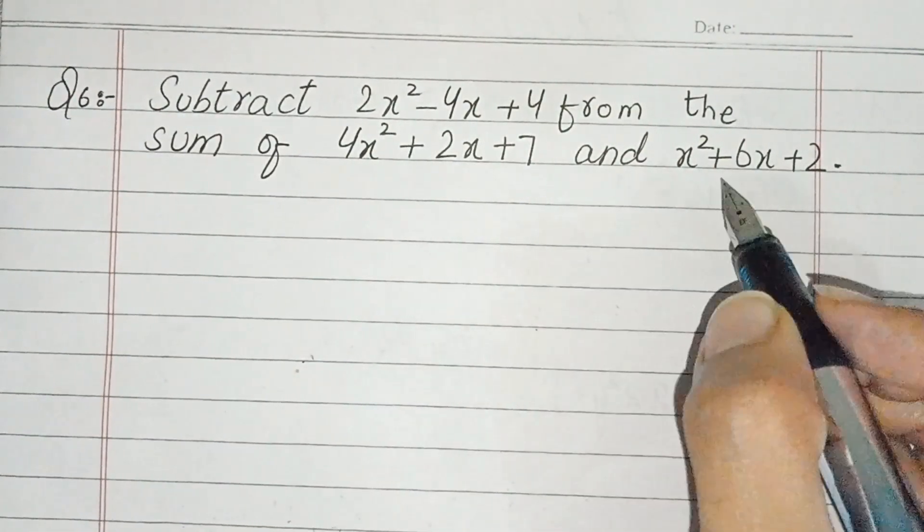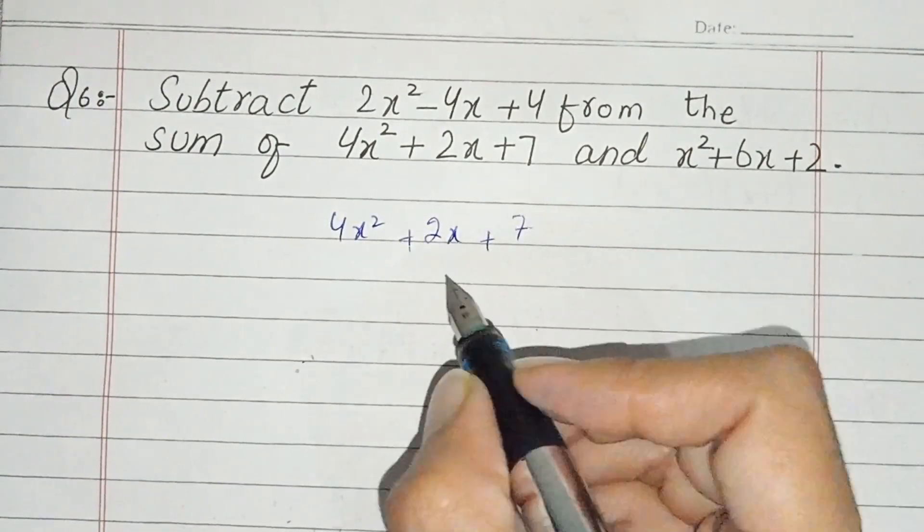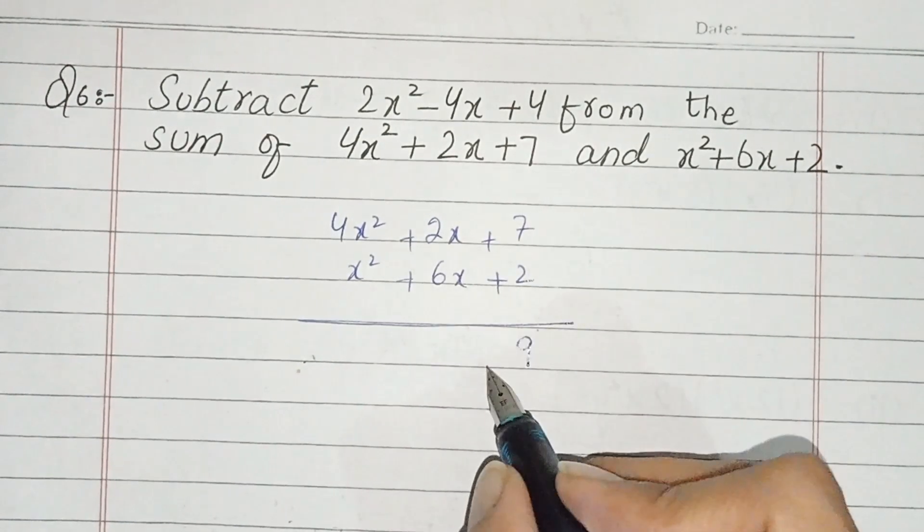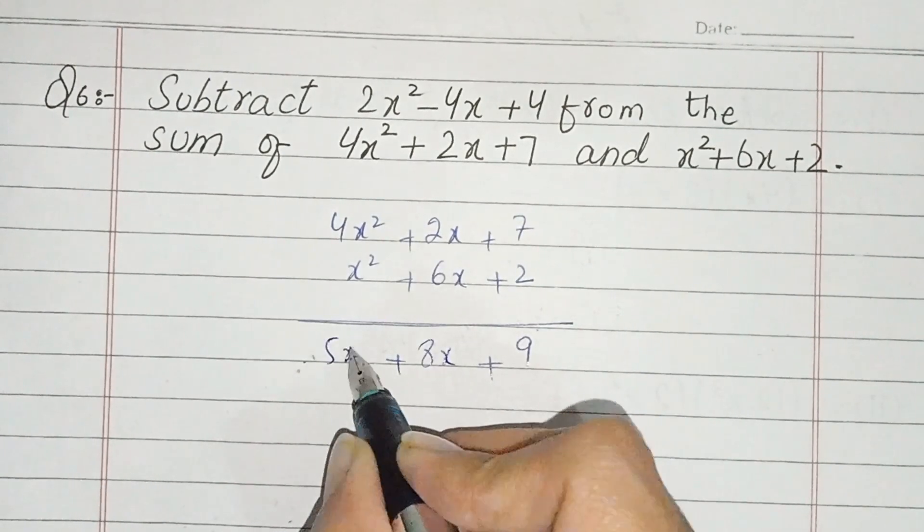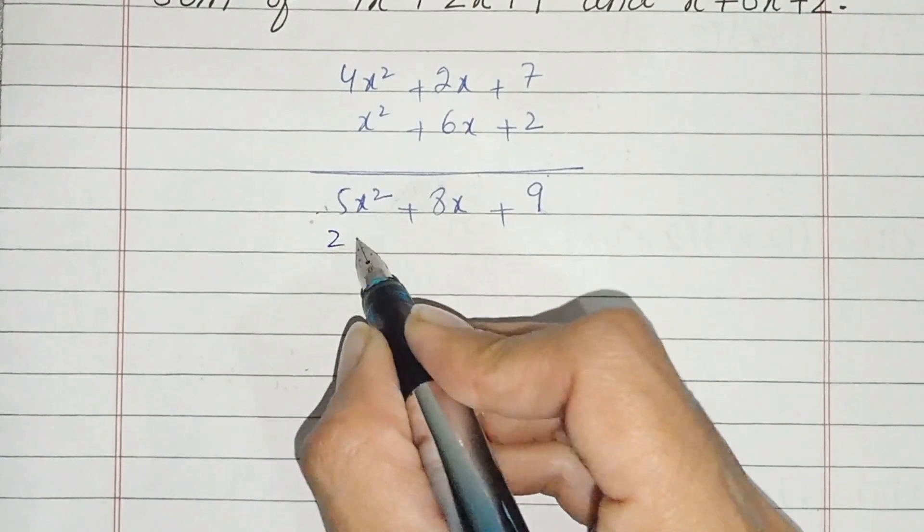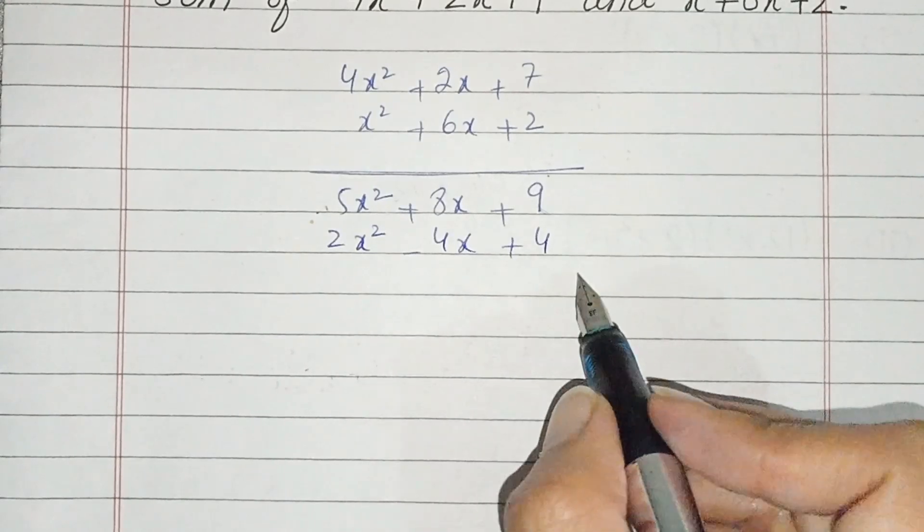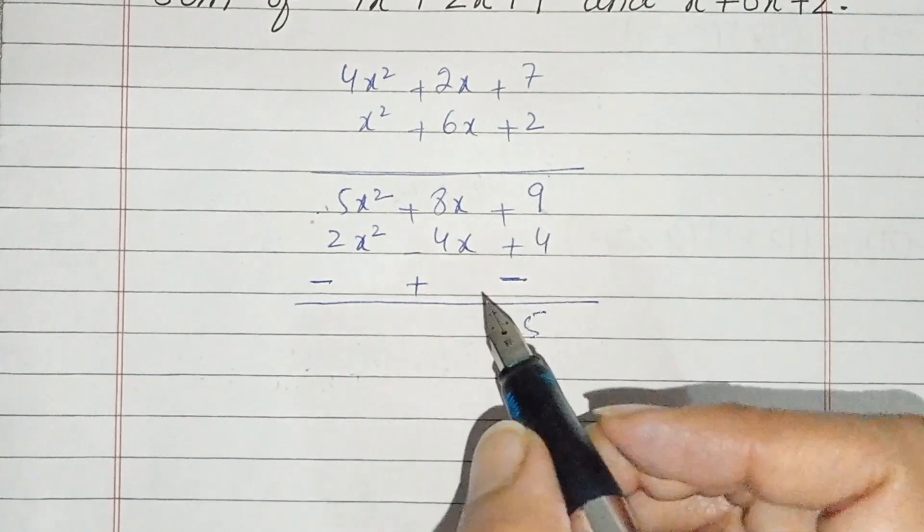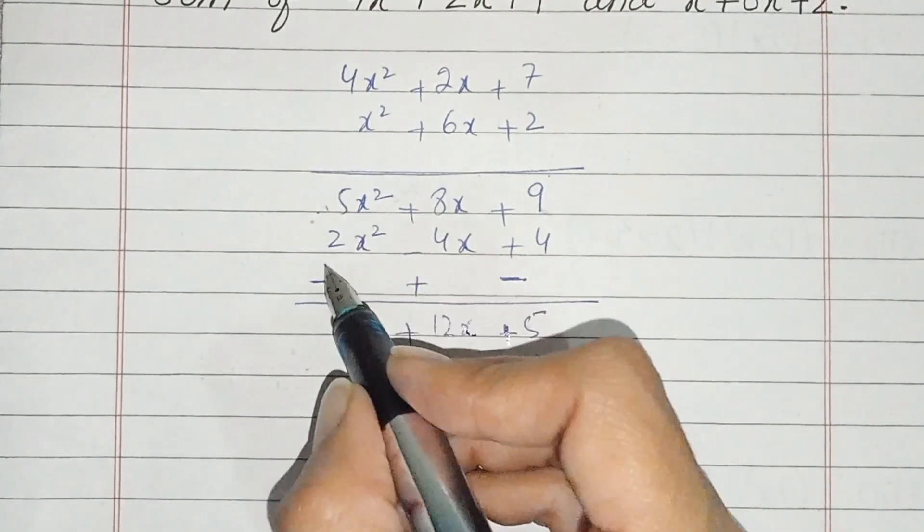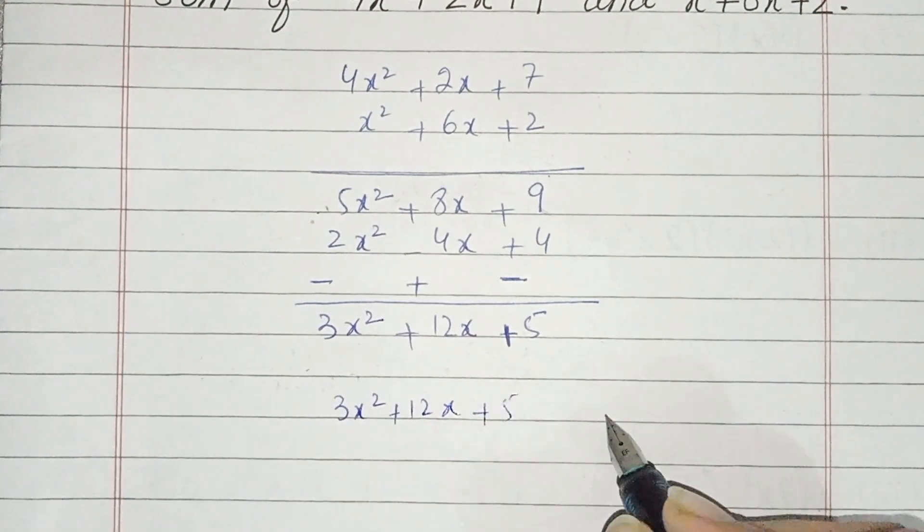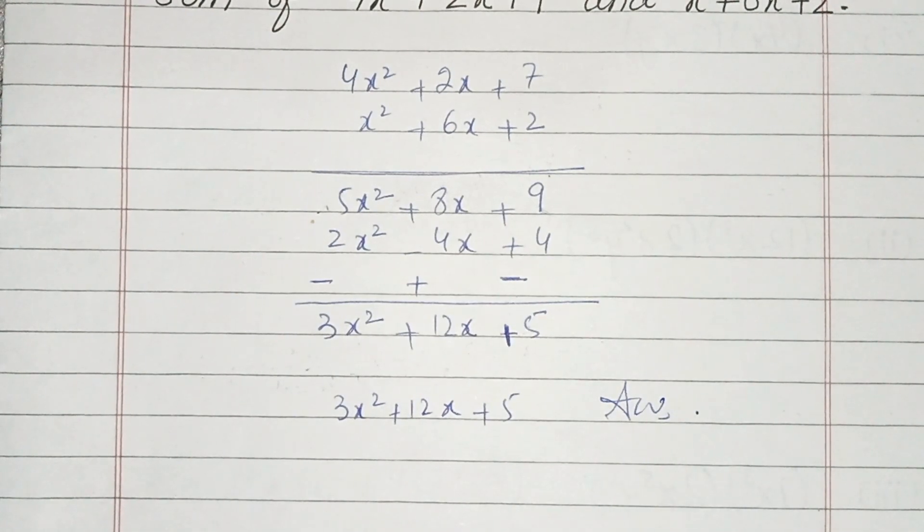Now students question number 6: subtract this value from the sum of these two values. We take the sum: 7x square plus 6x plus 2 plus 2x square plus 2x plus 3. The sum: 7 plus 2 is 9x square, 6 plus 2 is 8x, and 2 plus 3 is 5. Now we subtract: 2x square minus 4x plus 4. We subtract, the signs change. 9 minus 2 we get 7, but it's 4, so we get 5x square, sign positive. 8 plus 4 is 12, we get 12x. 5 minus 1 we get 4, but actually 5 minus 2 we get 3x square. The answer is 3x square plus 12x plus 5. Now students question number 5 is solved. I hope this exercise is finished.